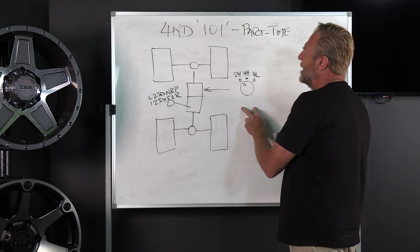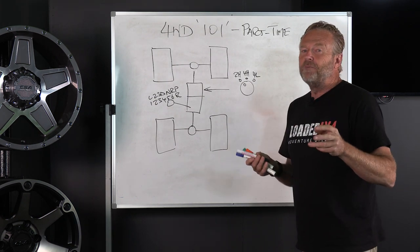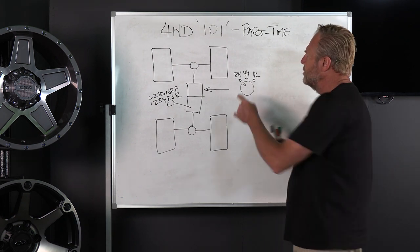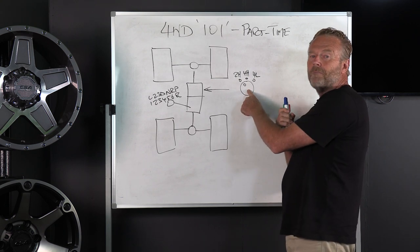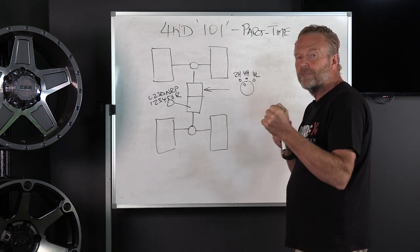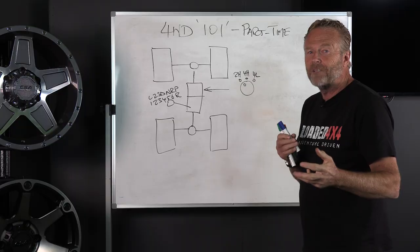The modern idiom for building a part-time 4WD is to use a selector that looks like this. Back in the day we used to have a transfer lever, the good old-fashioned analog way of engaging 4WD.